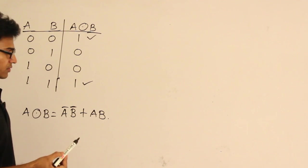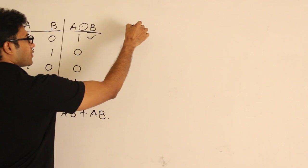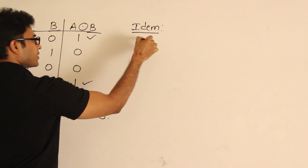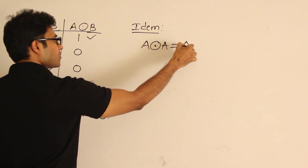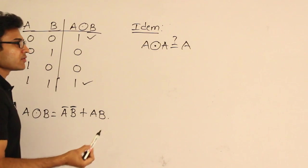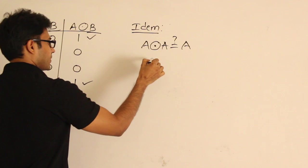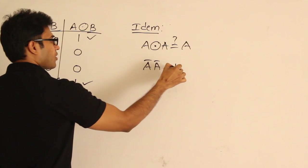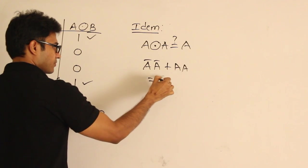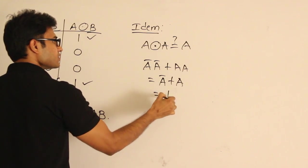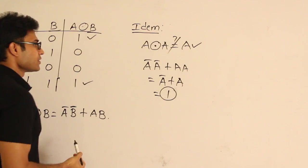Now let's see whether all the properties are followed by Exclusive NOR. The first property: let's check whether it is idempotent or not. We check A XNOR A and see whether it equals A. Expanding: A'A' + AA = A' + A = 1. So I got 1 here but I expected A. Therefore, Exclusive NOR is not idempotent.